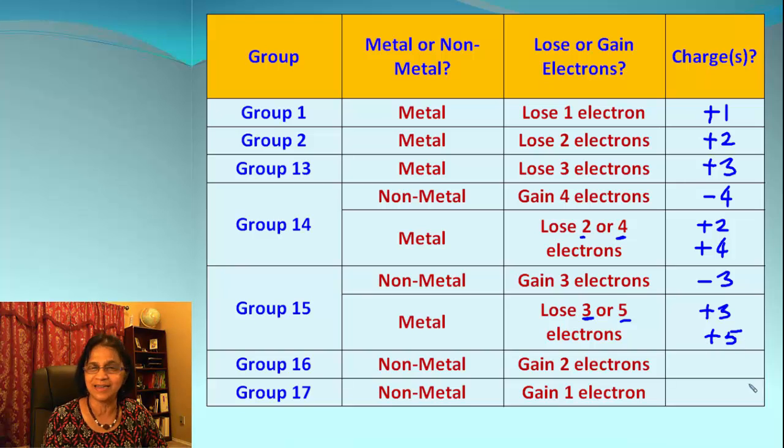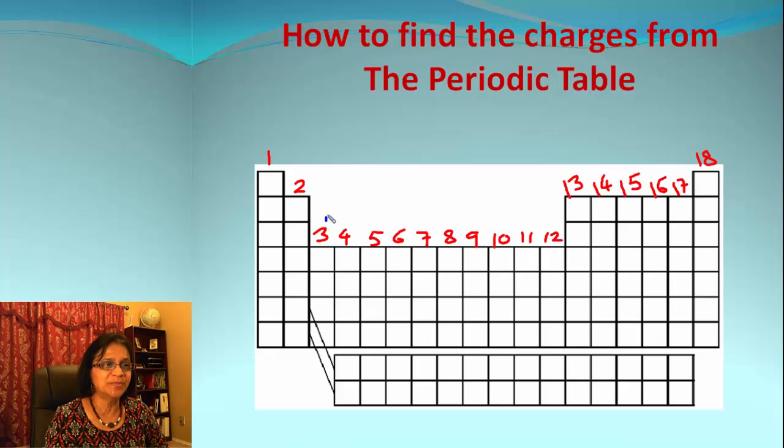Group 16 will always gain two electrons, and therefore it'll be negative two. And group 17 will be only gaining one electron to get to the noble gas world, so it'll be negative one as the charge. It is that simple. Now we did not discuss group number 3 to group number 12.